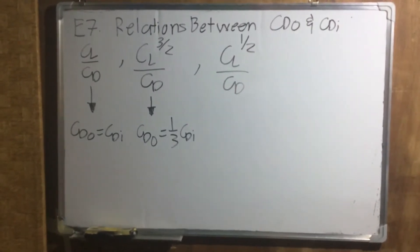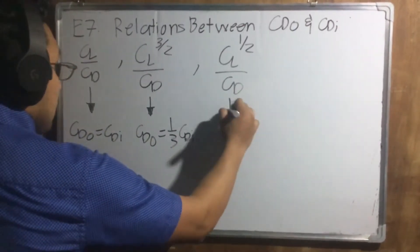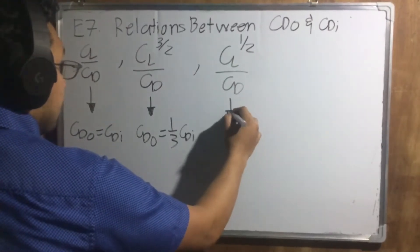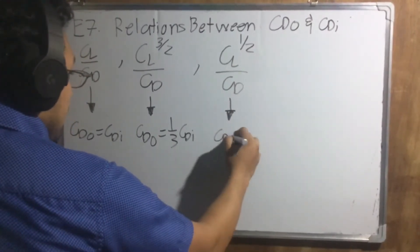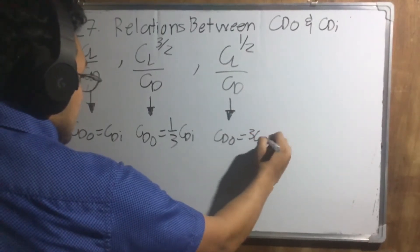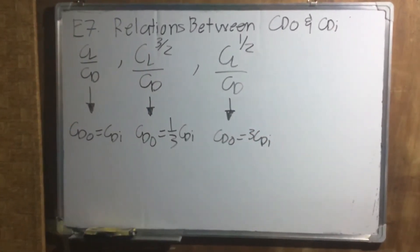And lastly, for CL one half over CD, CDO is equals to 3 CDI.